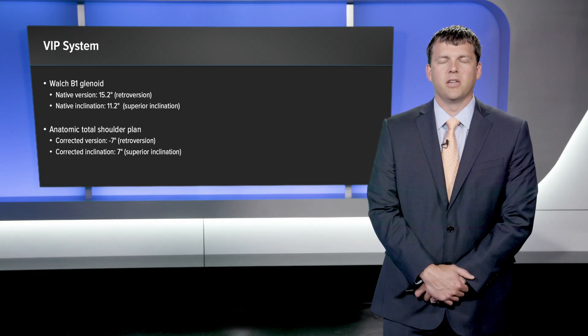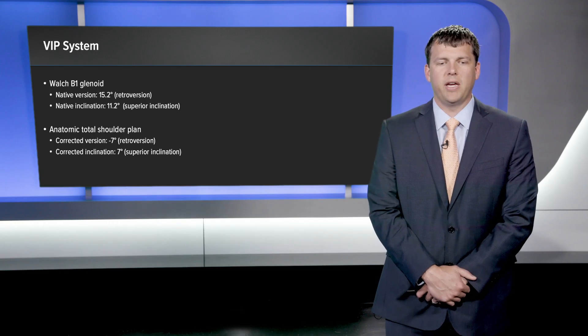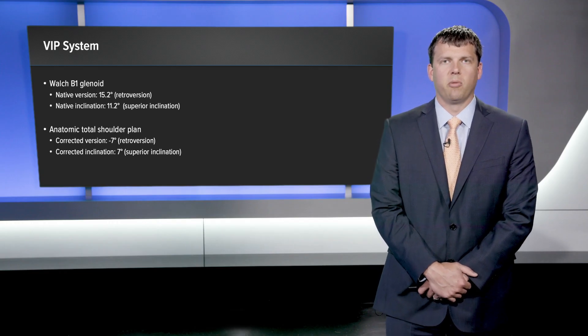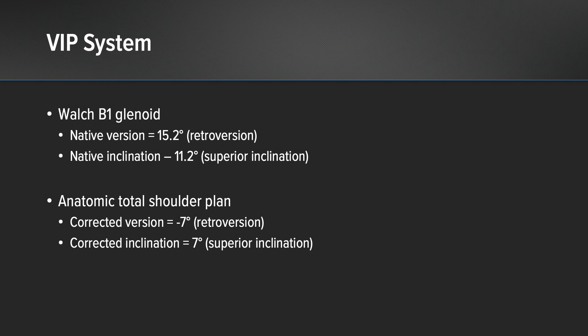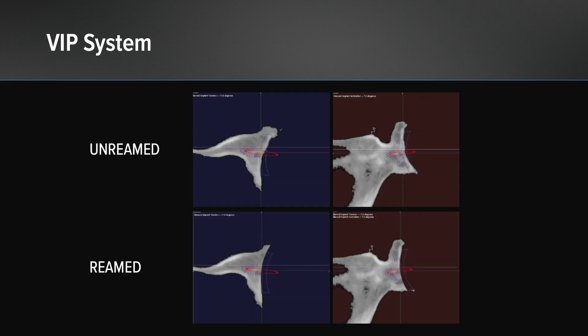So we're doing a mix of respecting the patient's deformity and also providing correction. This slide demonstrates both reamed and unreamed views of the patient's anatomy with our glenoid component — a large vault lock component — in position.